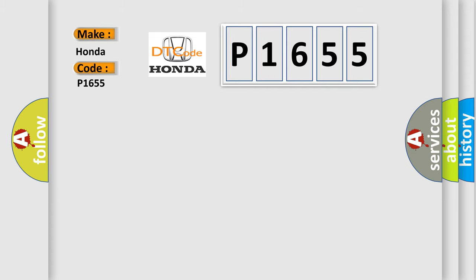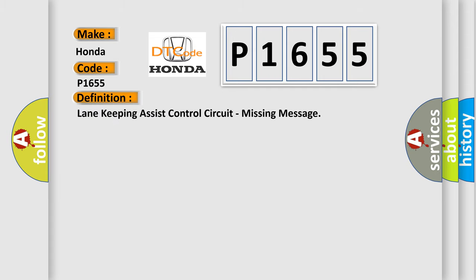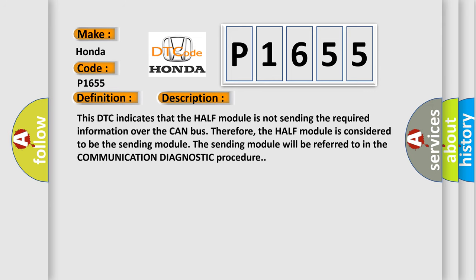The basic definition is: Lane Keeping Assist Control Circuit, Missing Message. This DTC indicates that the LKAS module is not sending the required information over the CAN bus. Therefore, the LKAS module is considered to be the sending module, and it will be referred to in the Communication Diagnostic Procedure.